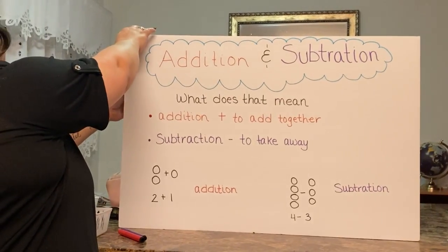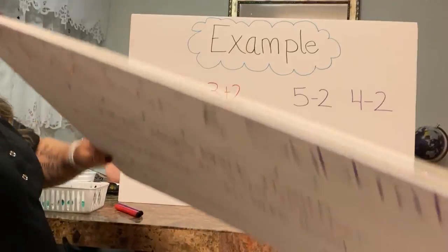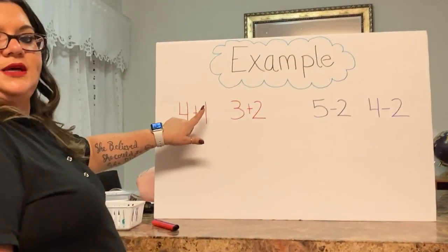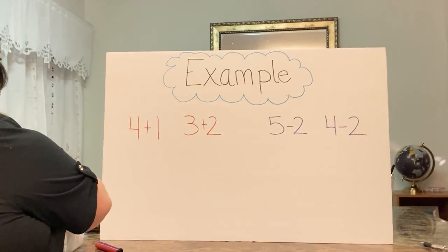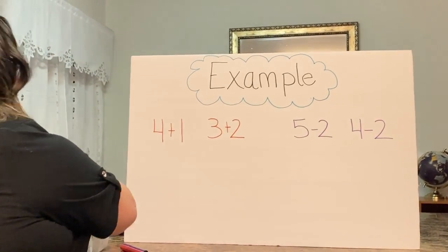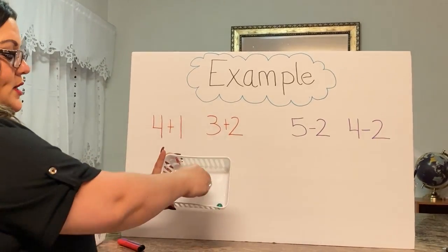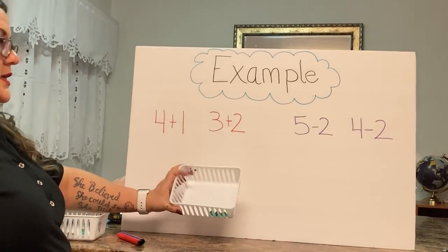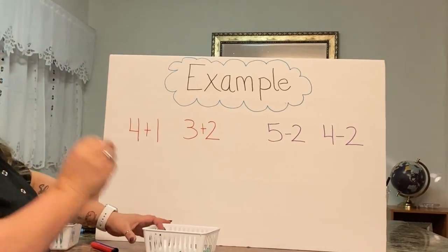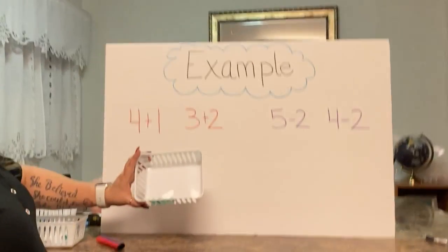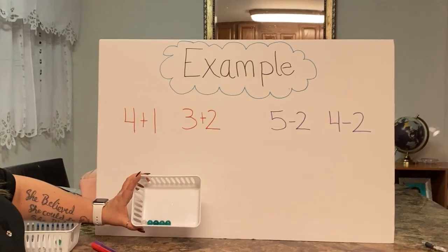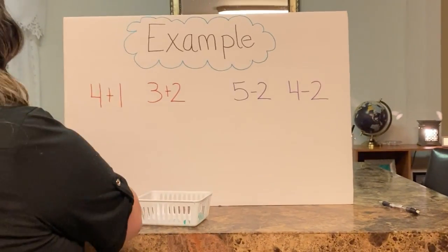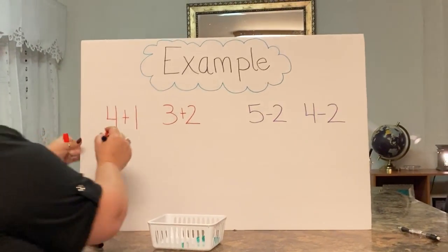Let's try some examples. We have four plus one. So you would take four green marbles. One, two, three, and four. Four green marbles and one white marble. So four green marbles and one white marble is five. Four plus one equals five.